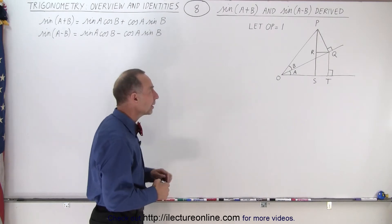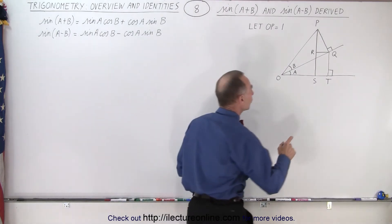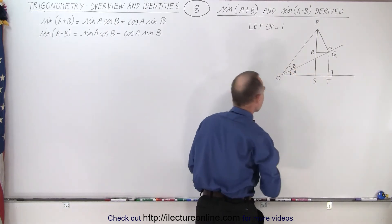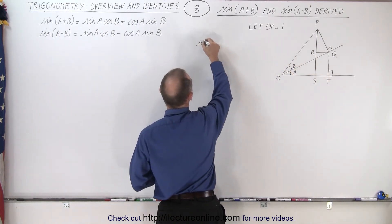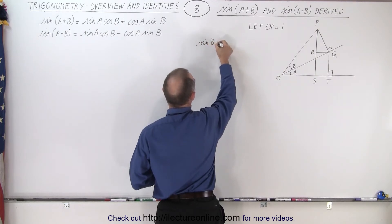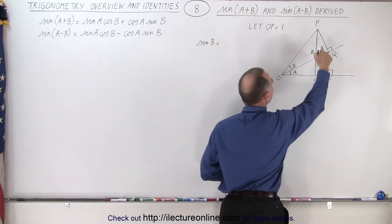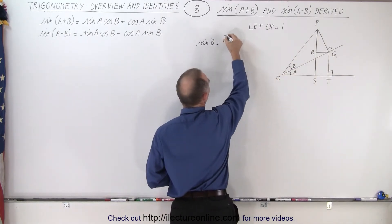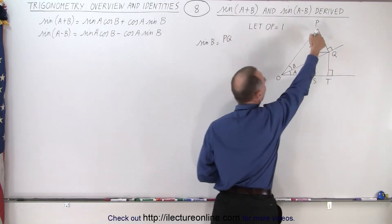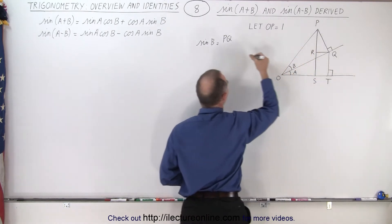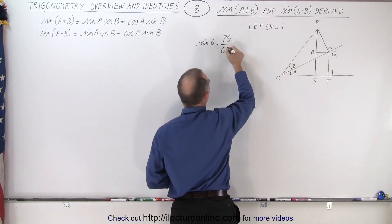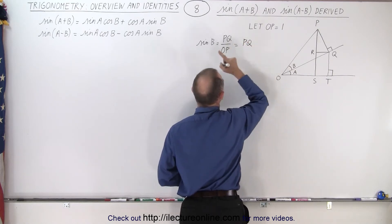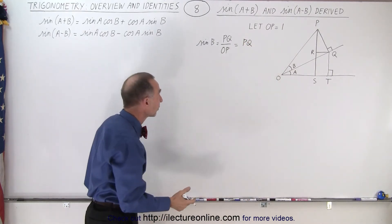Based upon that, let's define the sine and the cosine in terms of angle b. We can say that the sine of b is equal to the ratio of the opposite side over the hypotenuse — that would equal PQ divided by OP. Since we defined OP to be equal to 1, that's equal to PQ. So by definition, the sine of b is equal to the length PQ.